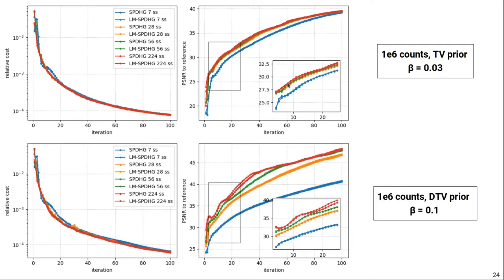The situation is slightly different if you look at the results for directional total variation, so the anatomical prior. Again, there's no difference between the list-mode and sinogram version, but we can see that here actually there is more difference between using 224, 56, and 28 subsets.